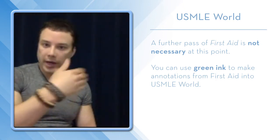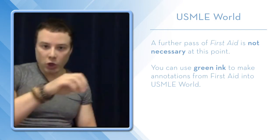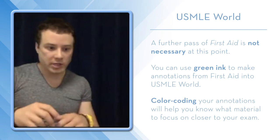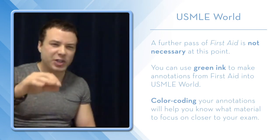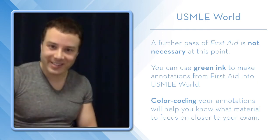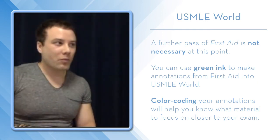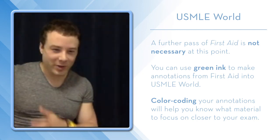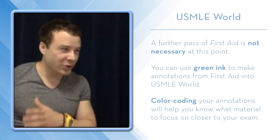When you're in the final two weeks approaching your exam, you'll look at the green ink in your FA. As you're flipping through, you'll see the green ink and know that is the focus — not just because it's UWorld, but because it's the most recent stuff you've written in there. Things you wrote early are probably stuff that's really easy to you now and you can just ignore.